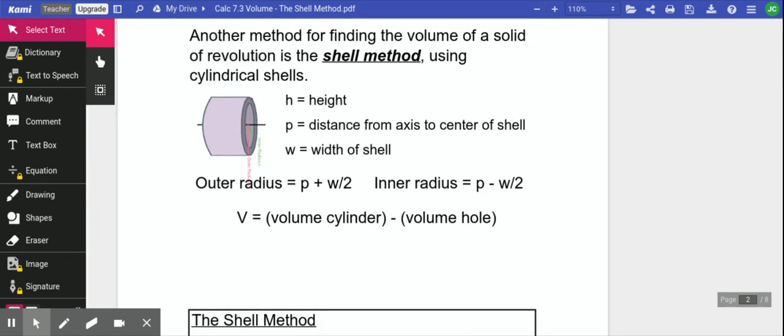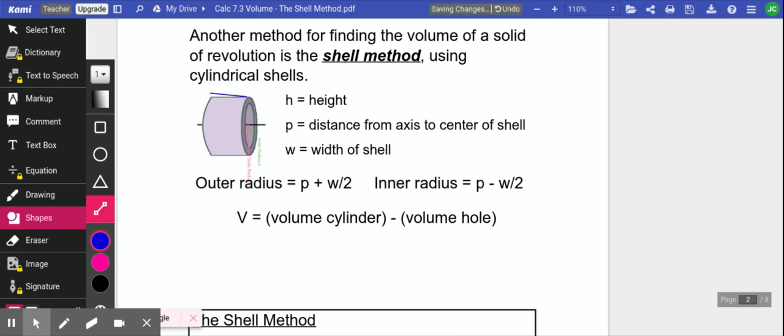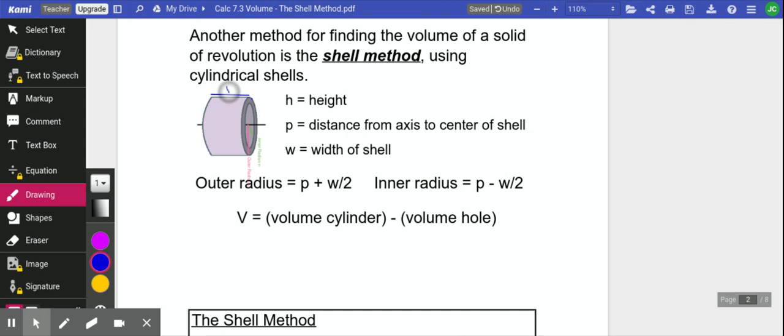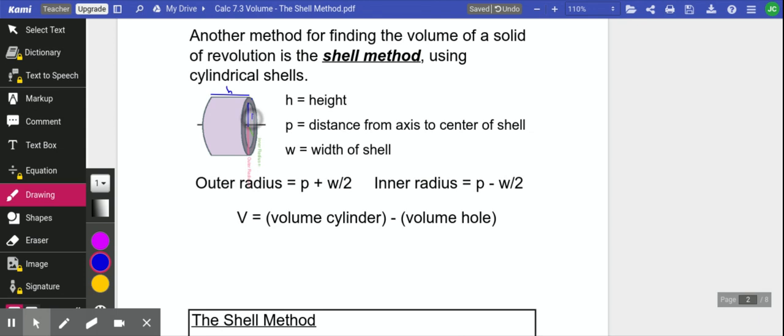We are going to create these shells. We need to establish a few things. We're going to talk about the height of our cylinder, which is this right here. That's going to be our height. P is going to be the distance from the axis that we're rotating around to the center of the shell. Not the inside and not the outside, the actual center of it. And then W is this width of the shell.